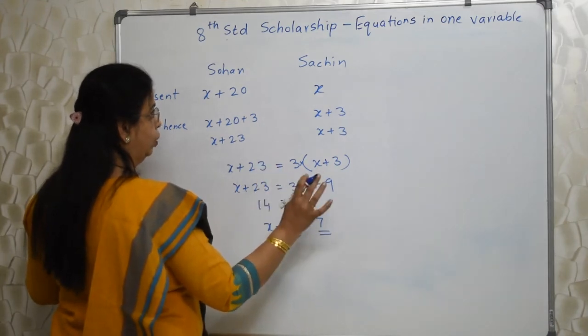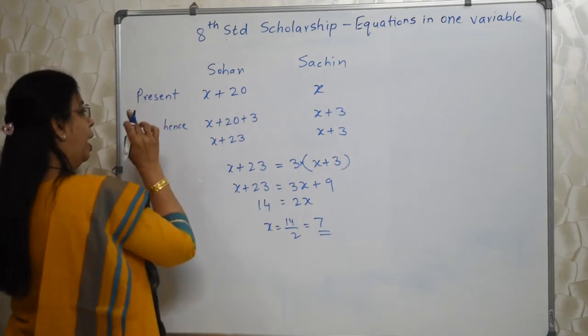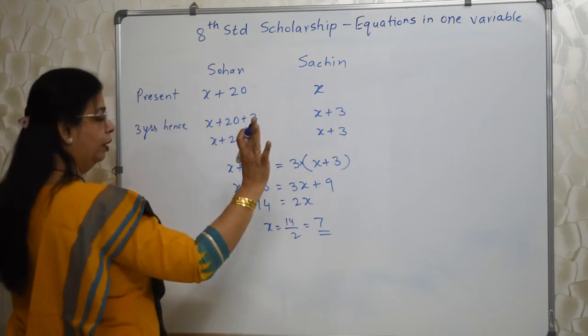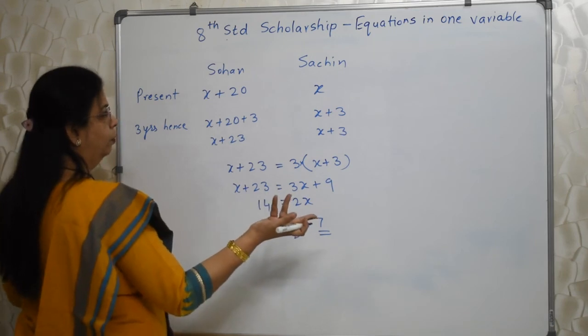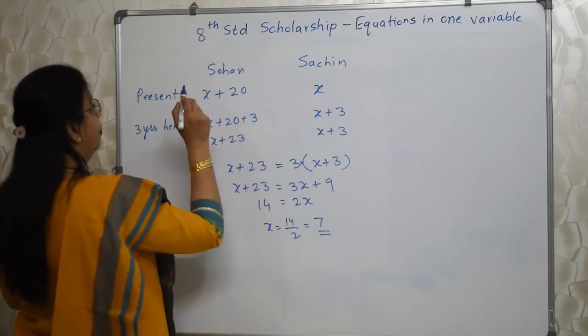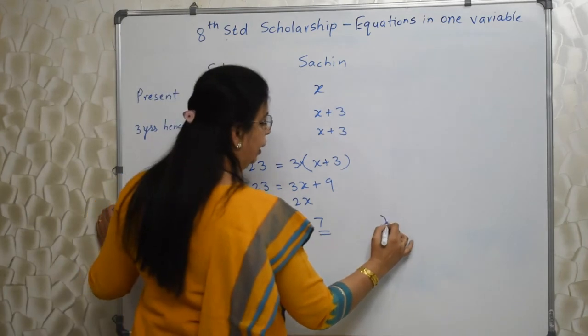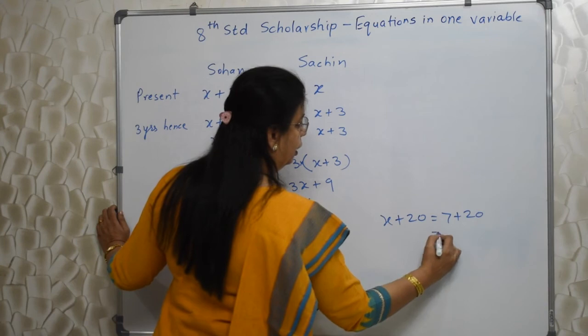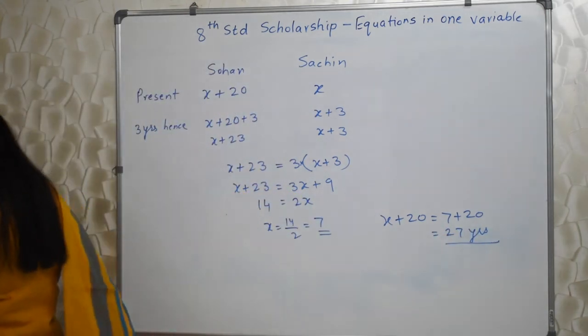They want Sohan's, that too present age. Sometimes they may ask 3 years wala age or 2 years past age, anything they can ask. Once you have the value of x, you will be able to find out anything. Now in this case they have asked what is the present age of Sohan. Present age of Sohan is x plus 20. So x is 7 plus 20, that is 27 years. So our answer is 27 years.